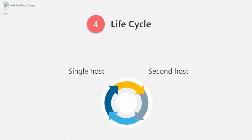Life cycle: the parasite can exhibit its life cycle in either a single host or multiple hosts. Protozoa like intestinal flagellates and ciliates require only one host, multiplying asexually in the trophic stage and transferring to another host in cystic form. In some protozoa like Plasmodium, asexual reproduction occurs in one host (man) and sexual reproduction in another host (mosquito).